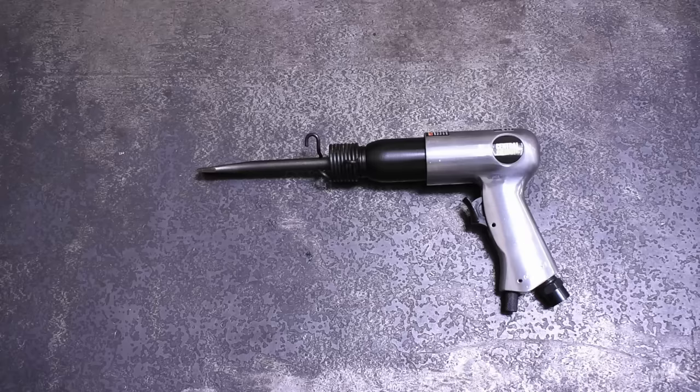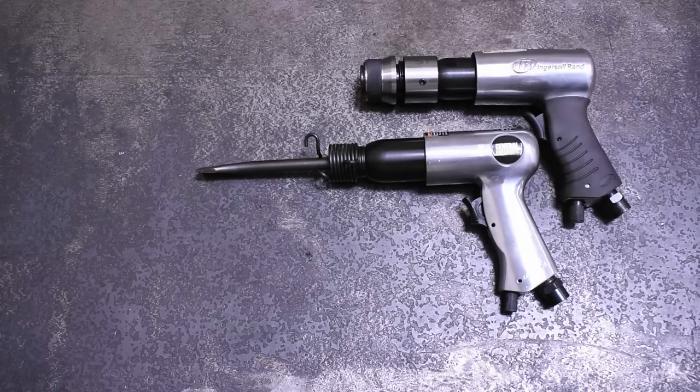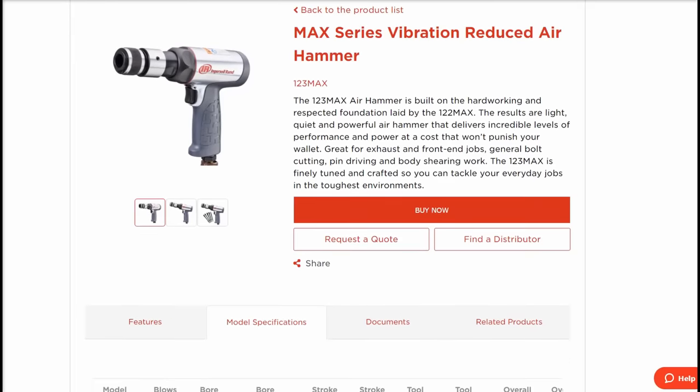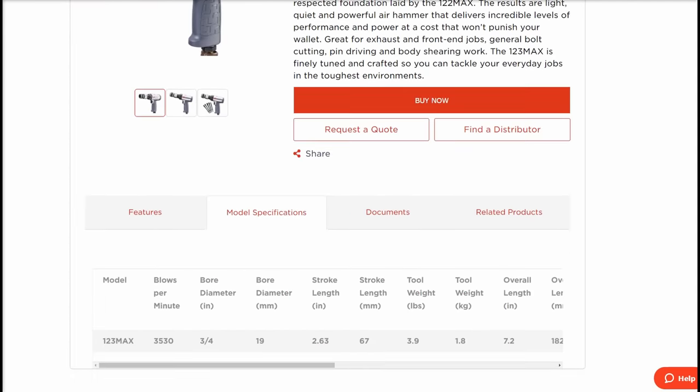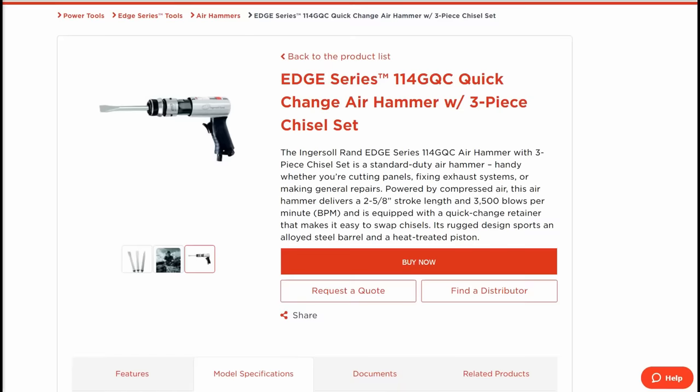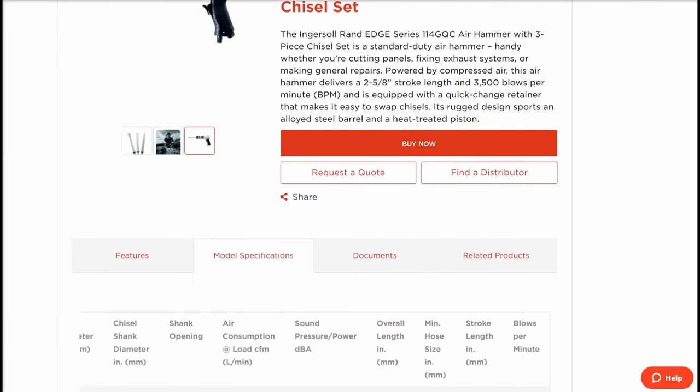Now, while our debut IR air hammer isn't advertised as a medium barrel air hammer per se, IR's other medium barrel air hammers share many of the same specs, and this medium from Harbor Freight has a two-and-five-eighths inch stroke, just like the 114 GQC.